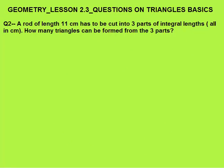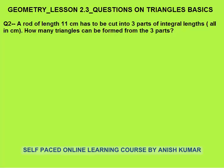Second question: a rod of length 11 centimeters has to be cut into three parts of integral length. How many triangles can be formed from these three parts? We assume the parts are x centimeters, y centimeters, and z centimeters in length, and x plus y plus z must equal 11 centimeters.